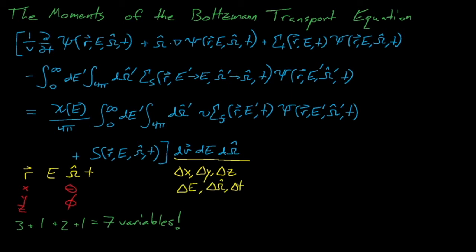For example, we might assume that all of our neutrons have the same energy, which allows us to integrate out the energy variable, or we could assume that our reactor is infinitely reflected and homogenous, which allows us to remove the x, y, and z variables. Or we could assume that all fluxes are isotropic, which allows us to remove the direction variable. But in general, we can't remove these variables just as easily as that, so instead we need to discretize the angular flux into sub-angular fluxes with different groupings, or deltas, of position, energy, direction, and time, and then solve these equations.